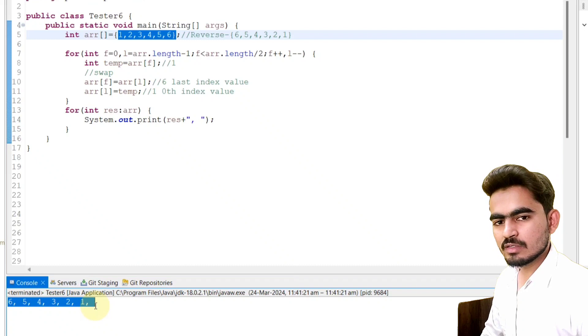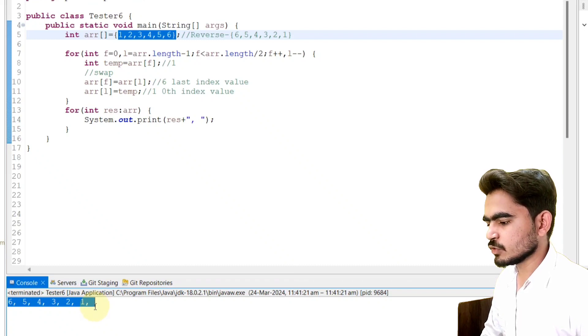If you observe input array with output, what is our input array: 1, 2, 3, 4, 5, 6. Our output array: 6, 5, 4, 3, 2, 1. That means we have successfully reversed our array.